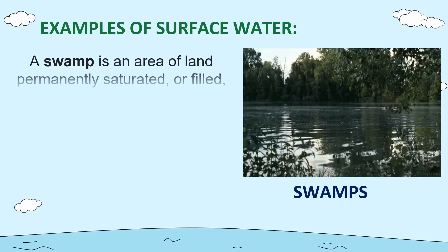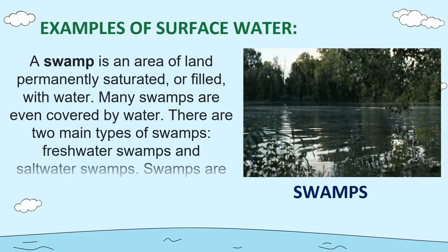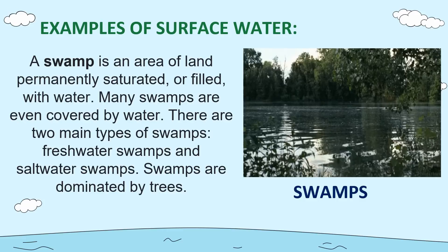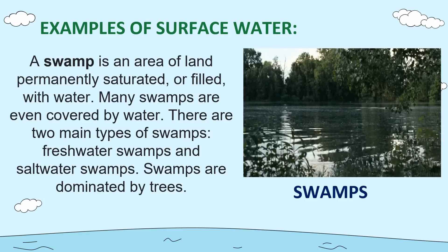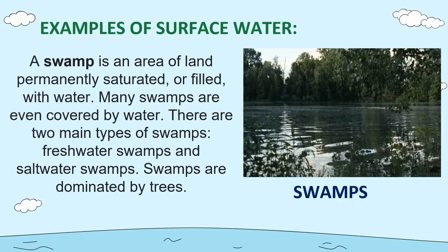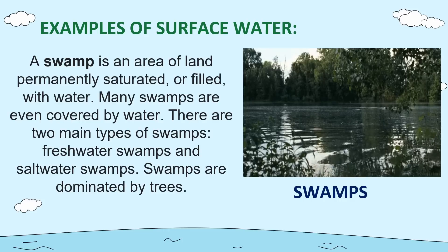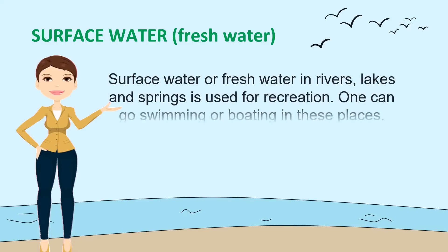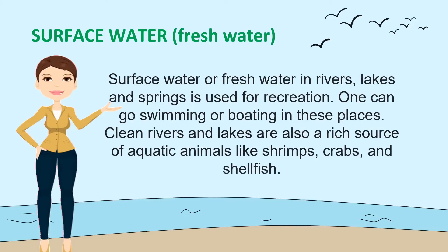Another example of surface water is a swamp. A swamp is an area of land permanently saturated or filled with water. Many swamps are even covered by water. There are two main types: freshwater swamps and saltwater swamps. Swamps are dominated by trees. Surface water in rivers, lakes, and springs is also used for recreation — one can go swimming or boating. Clean rivers and lakes are also a rich source of aquatic animals like shrimps, crabs, and shellfish.